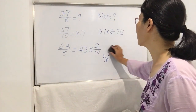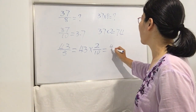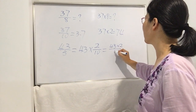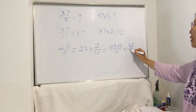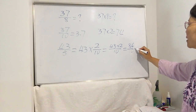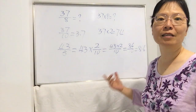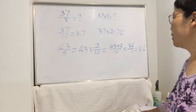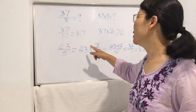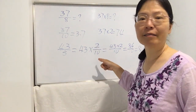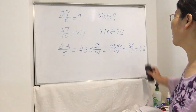So now let's work out the answer: 43 times 2 divided by 10 is 86 divided by 10, so the answer is 8.6. This is faster than the normal way. In the future, when you see a number divided by 5, use times 2 divided by 10, and you will quickly get the answer. Let's try one more example.